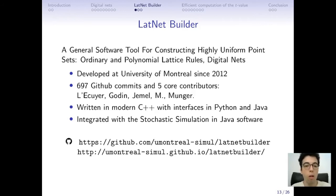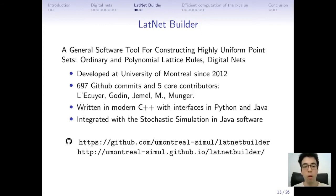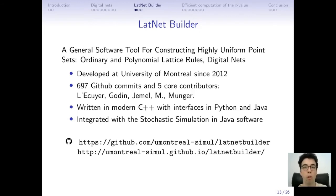To fill in this void, we developed at University of Montreal LatNetBuilder, a software tool for constructing highly uniform point sets. As of now, lattice rules and digital nets are supported, including both ordinary and polynomial lattice rules. It has been developed since 2012, hosted on GitHub with nearly 700 commits and five core contributors: Pierre Lécuyer for overall supervision, and for the code Maxime Godin, Eman Gimel, David Munger, and myself. It's written in C++ but has interfaces in Python and Java, and it's integrated with another software from University of Montreal called the Stochastic Simulation in Java.